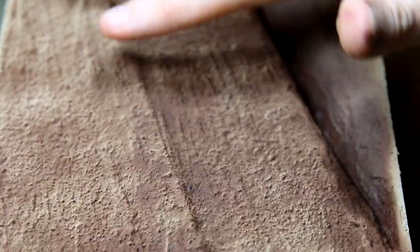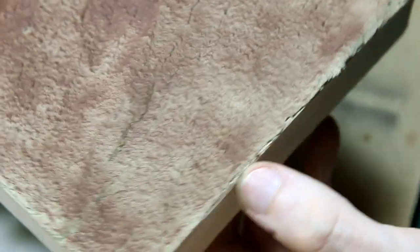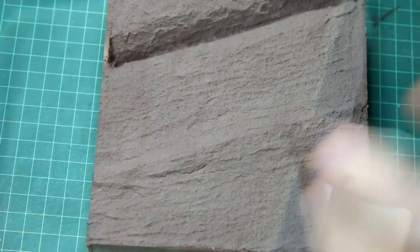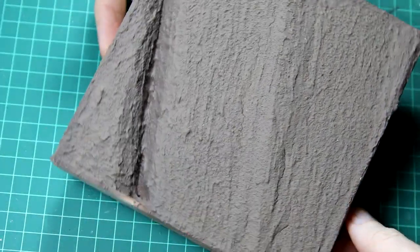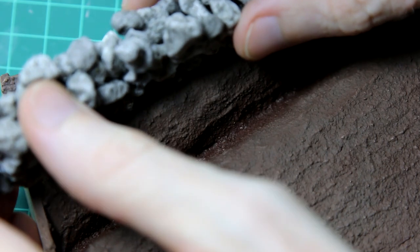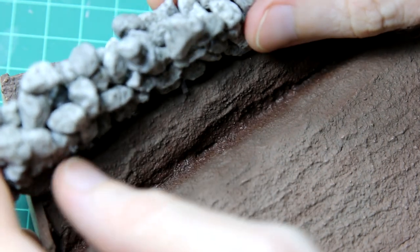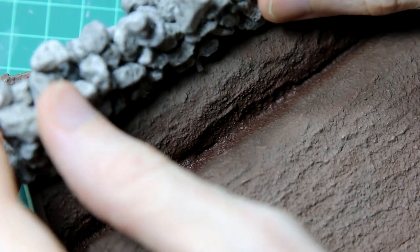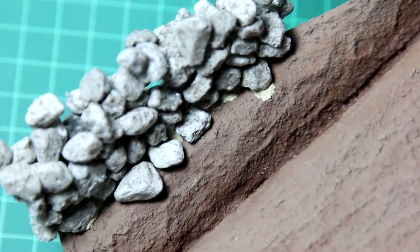Once the terrain was dry I gave it an airbrush of Tamiya XF 52 flat earth. And when you're painting this you need to make sure that you do it from all directions so that the base is completely covered and none of the material is still showing through. With that done I attached the wall to the base with a little bit more of the acrylic texture material. And that extra material can be touched up later.